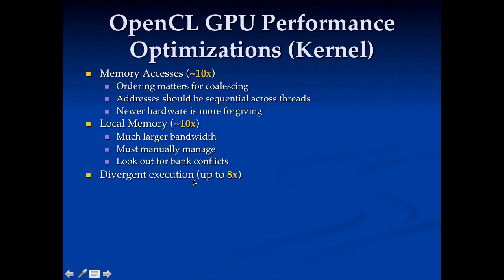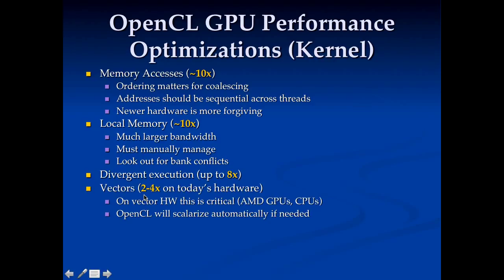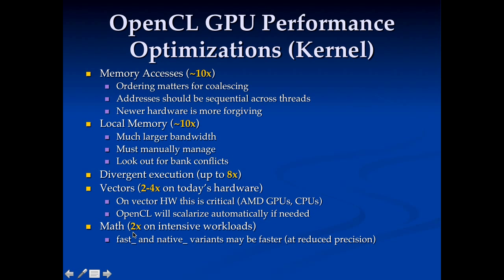Divergent execution can be a significant problem depending on the number of threads you have and how divergent they are. Vectors can make a big difference on some hardware — AMD GPUs and CPUs really benefit from vectors, so if you use the OpenCL language to express vectors you'll get the best performance on these devices. You don't have to worry about NVIDIA devices, which don't use vectors; OpenCL will just split your vectors up if it needs to. Finally, you can get a significant boost of about 2x on math-heavy code by using the fast or native variants, but remember these may be much lower precision, so think carefully about where in your algorithms you can use them.